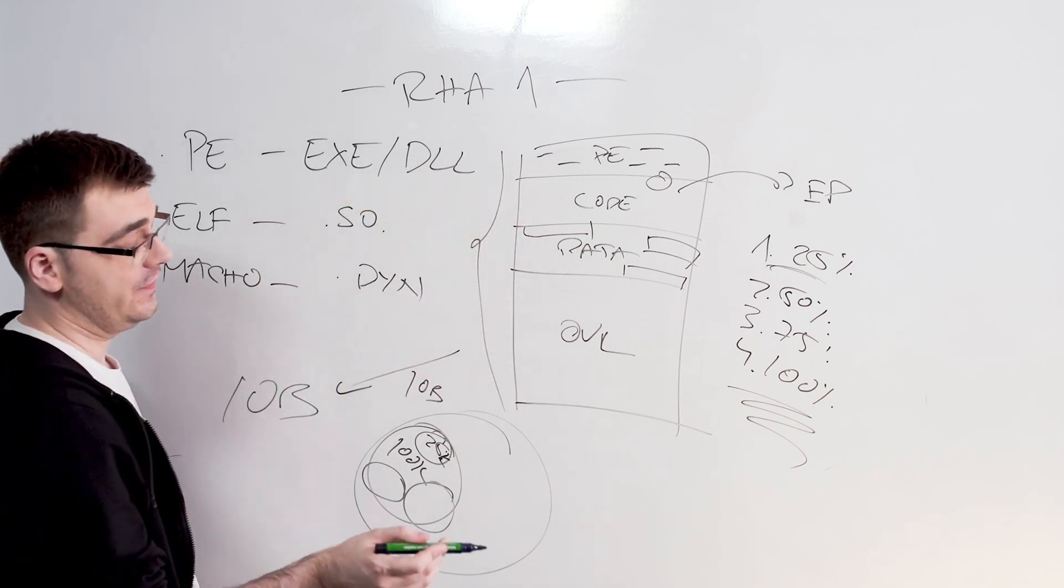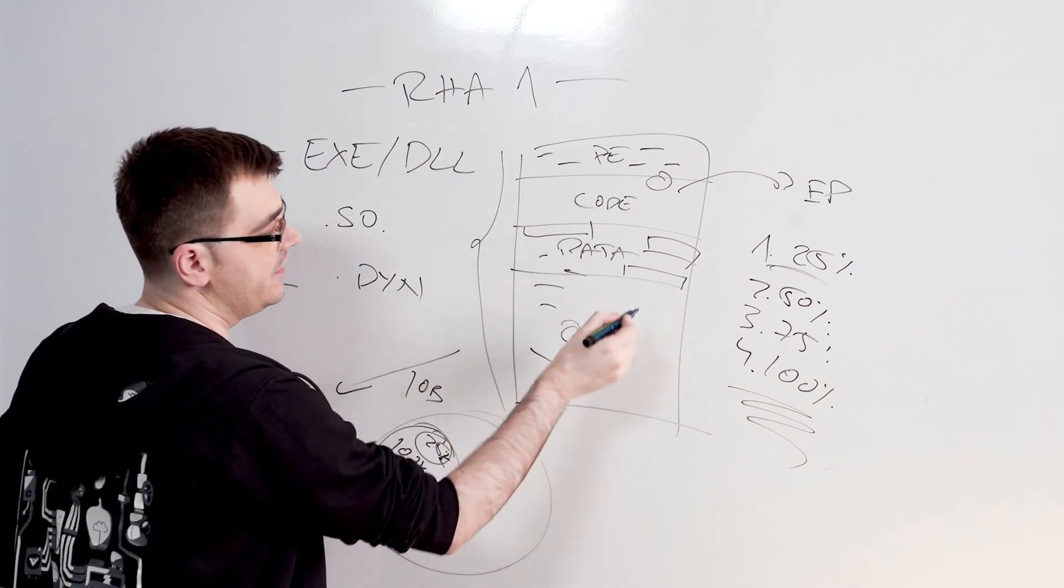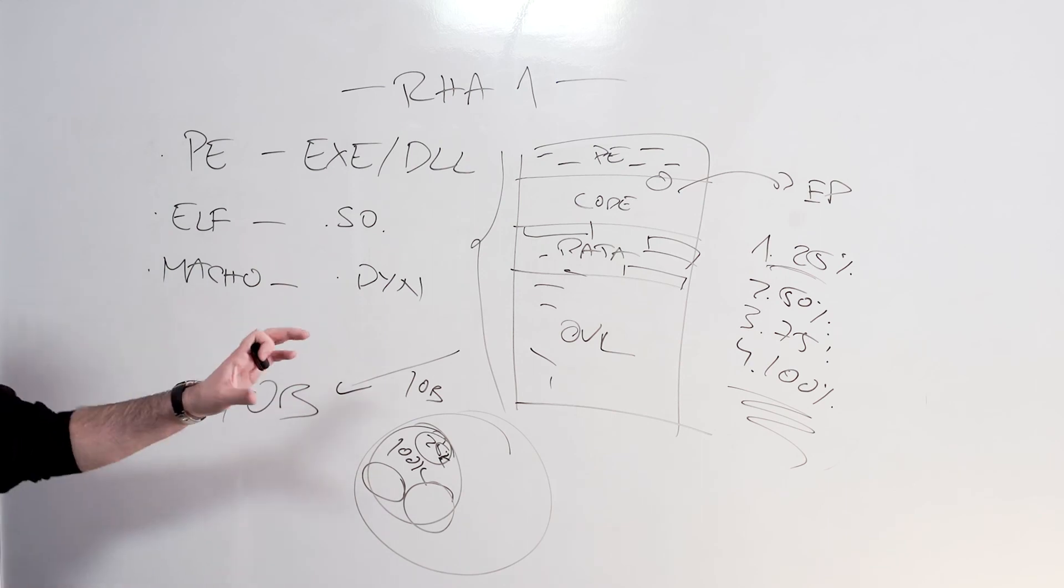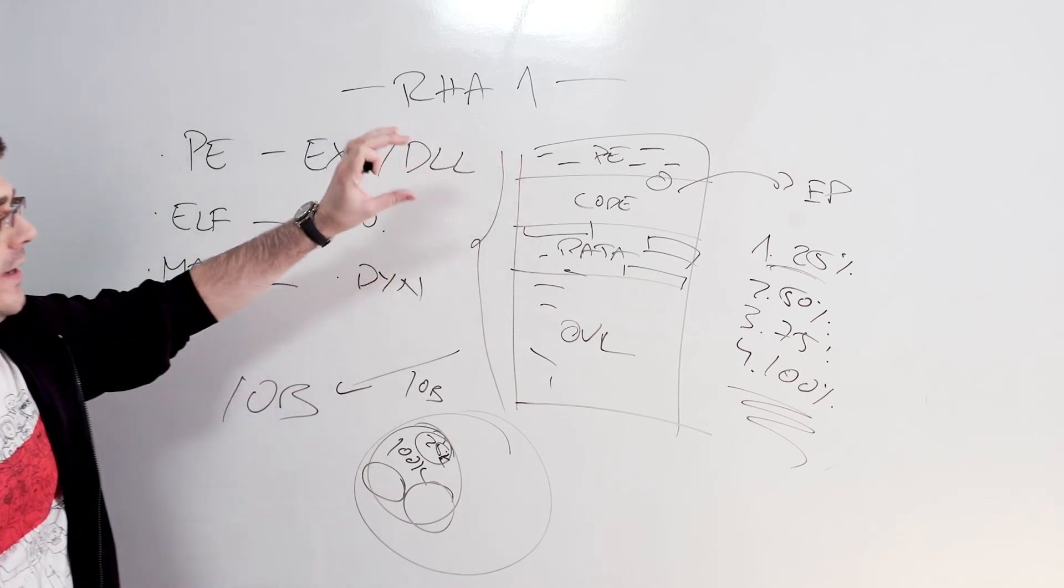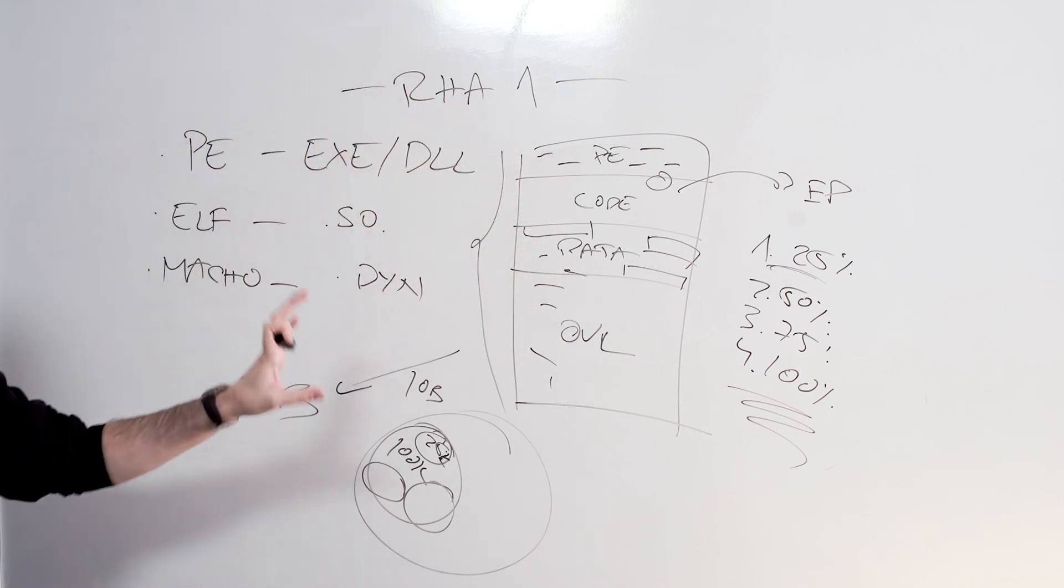That means the code of this file and anything similar to it is identical. It doesn't mean the hashes of the files are identical. There can be some changes here in the overlay, even some of the data might be different. But ultimately, the code, the way the code relates to each other and relates to the layout of the file, that's all identical.